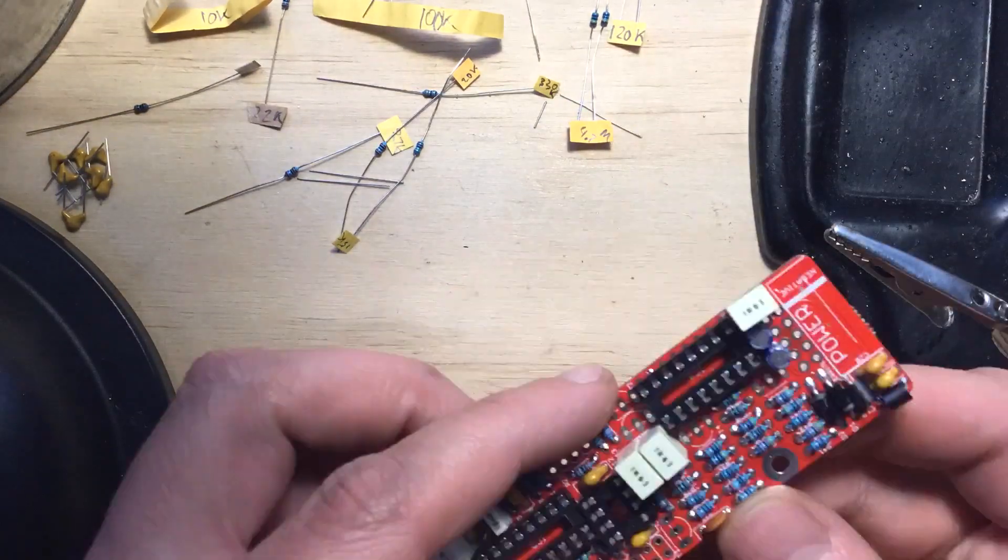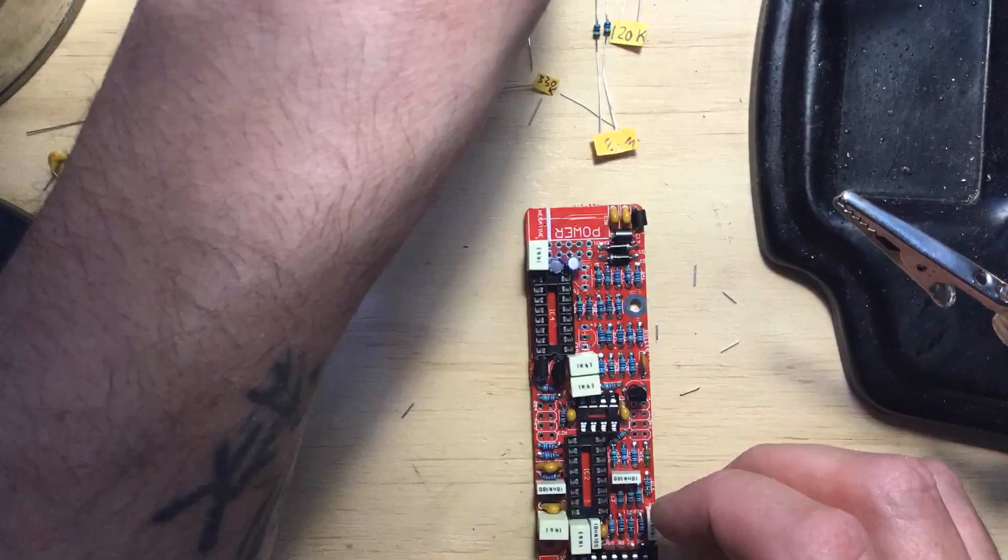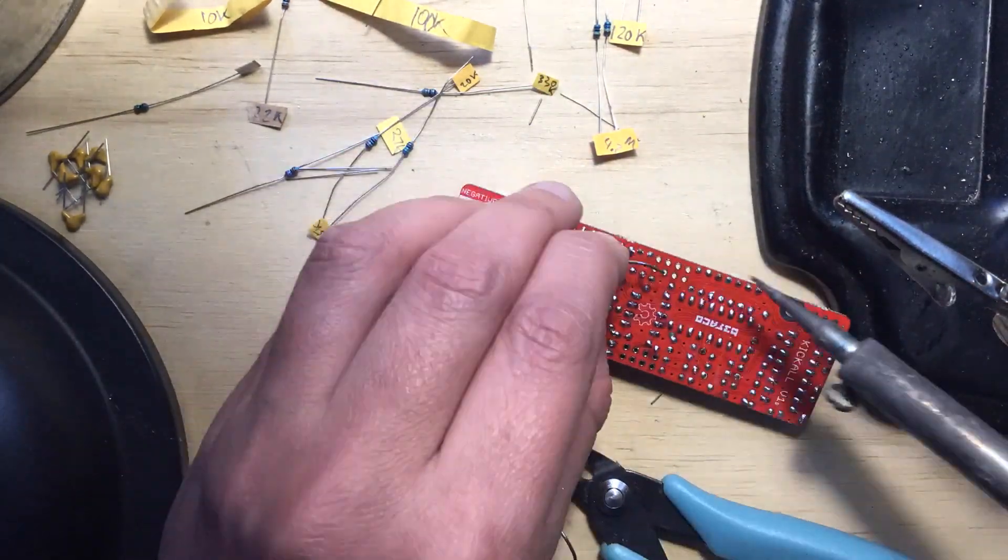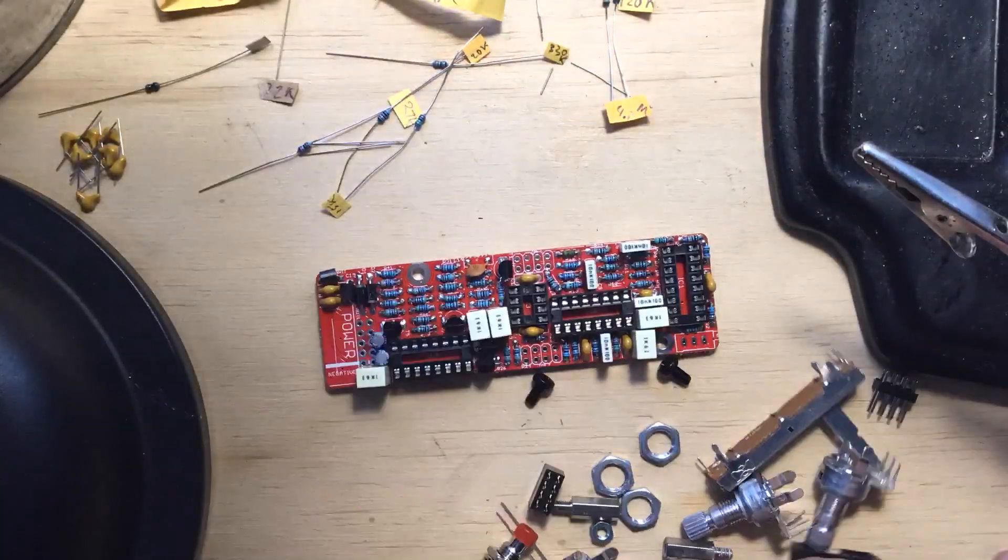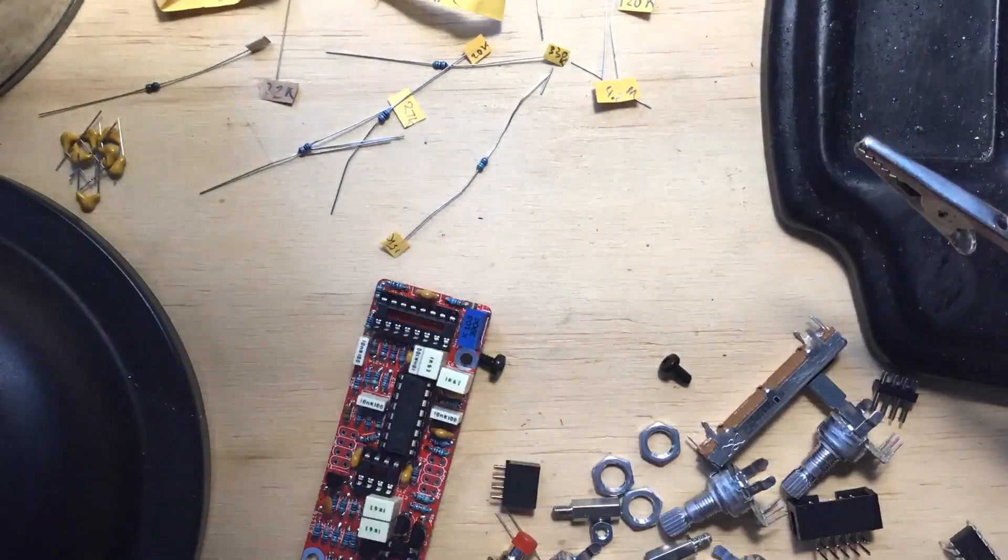After that came the transistors. Followed by the trim pot. Snap on the ICs minding their orientation.